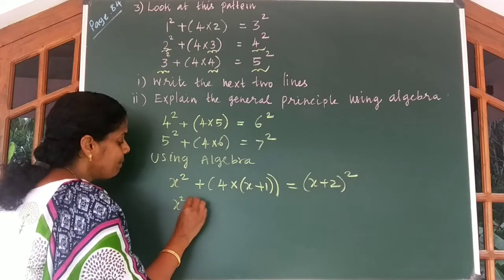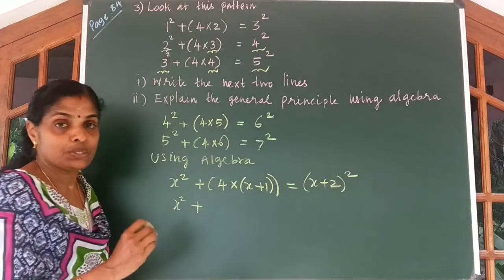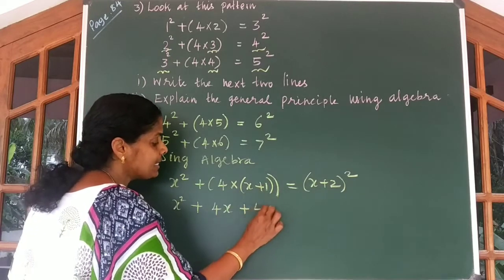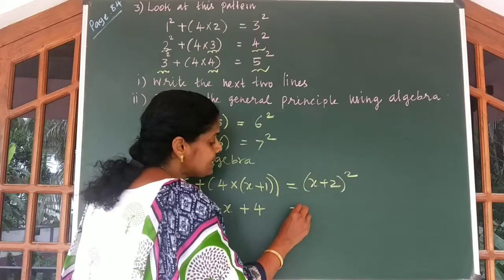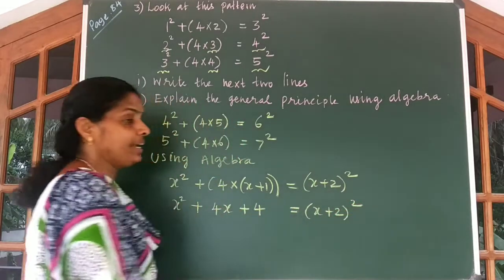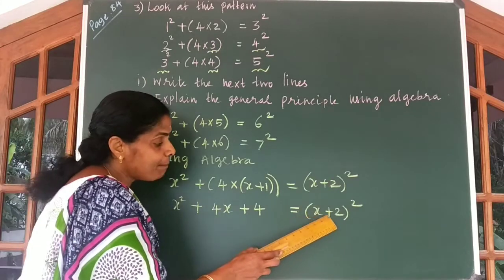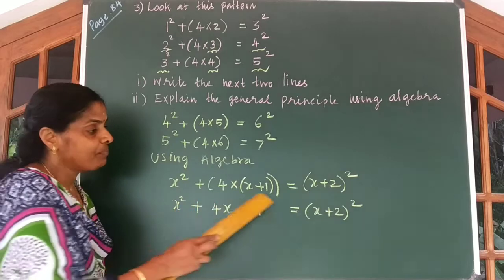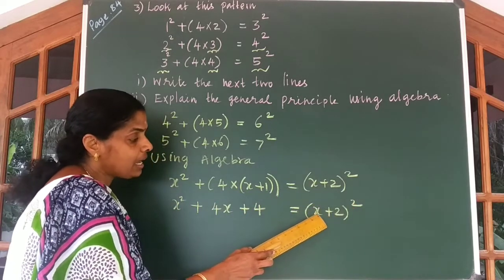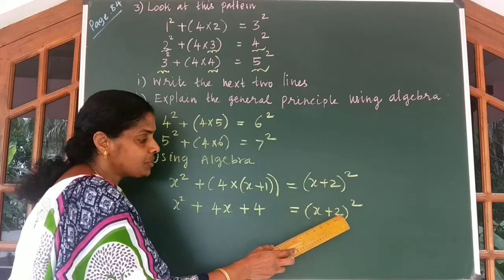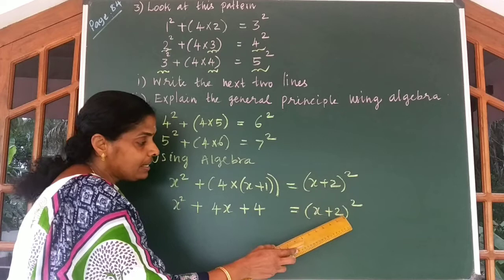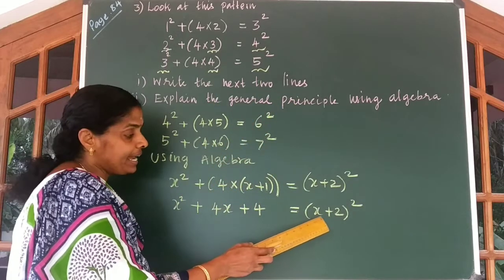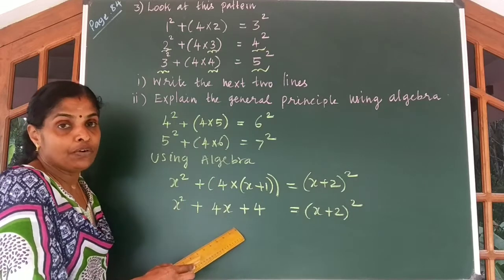Now let us expand and see: x square plus 4 multiplied with (x plus 1) gives 4x plus 4, and this is equal to (x plus 2) the whole square. Using a plus b whole square equals a square plus 2ab plus b square: you get x square plus 2 into x into 2 which gives 4x, and the last term 2 square equals 4. So we have explained using algebra that (x plus 2) whole square equals x square plus 4x plus 4.